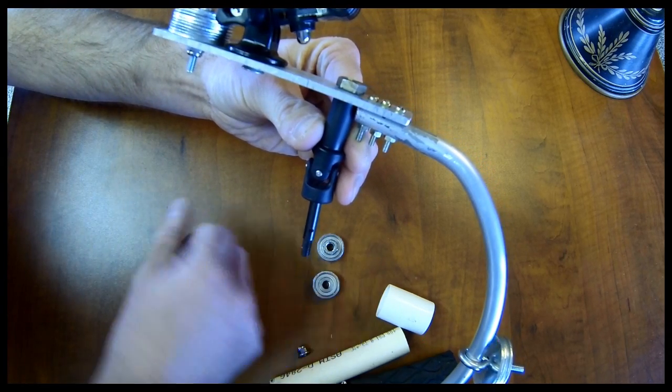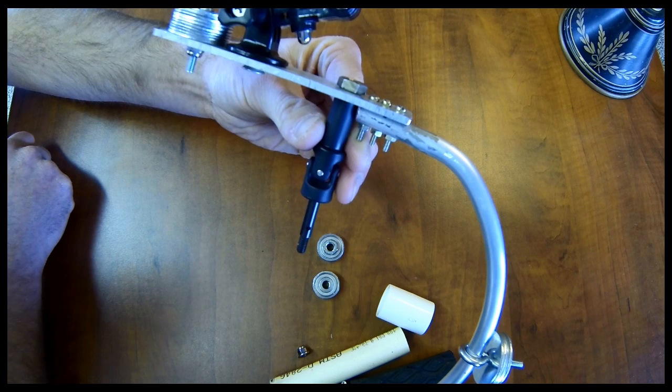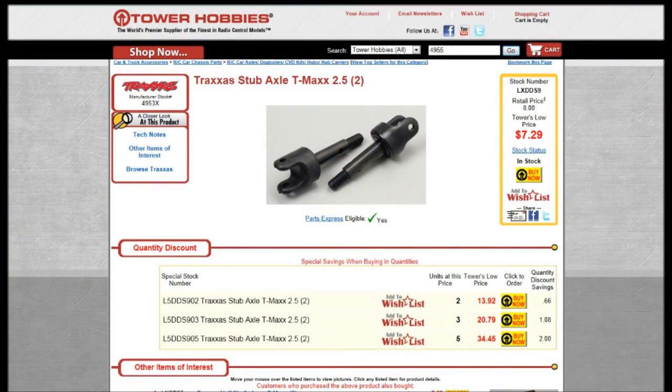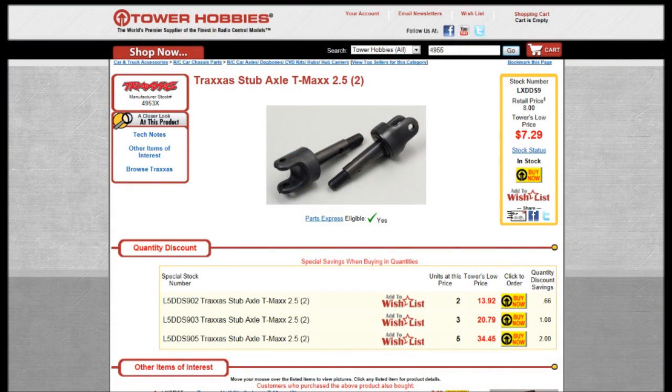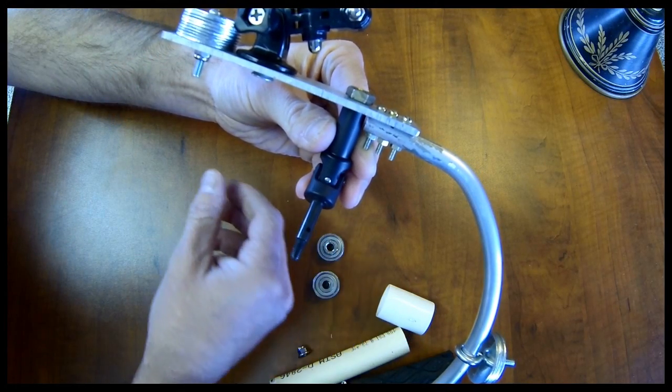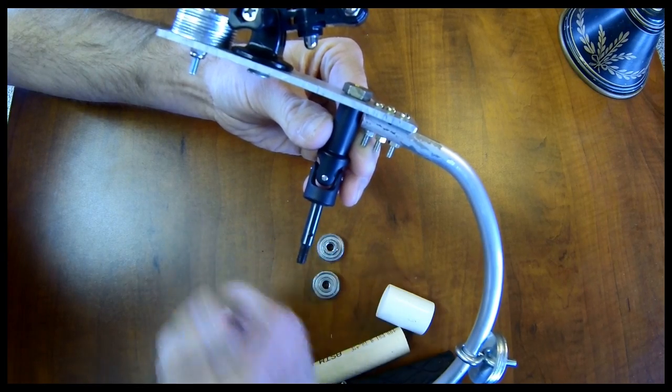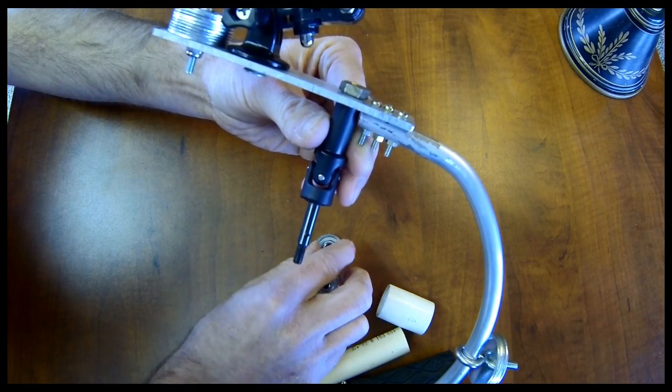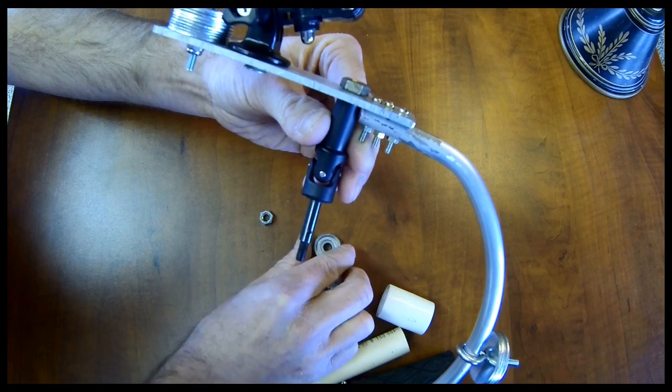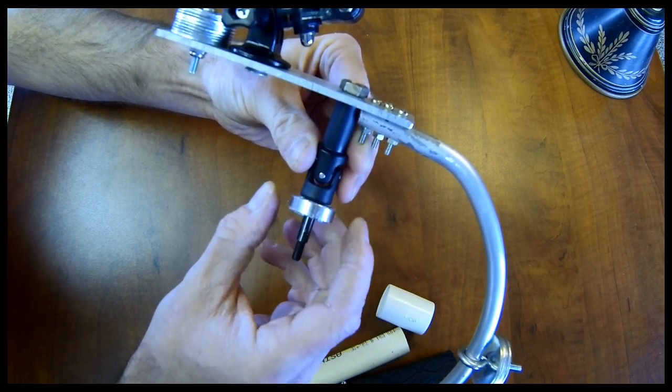You can see all the exploded views and parts on Traxxas' website. It already has this steel shaft on it with threads and everything so the 6x22x7 bearings just fit perfectly on there.